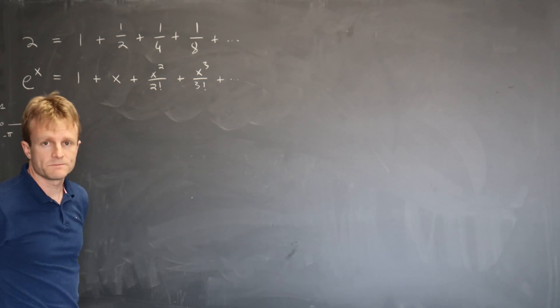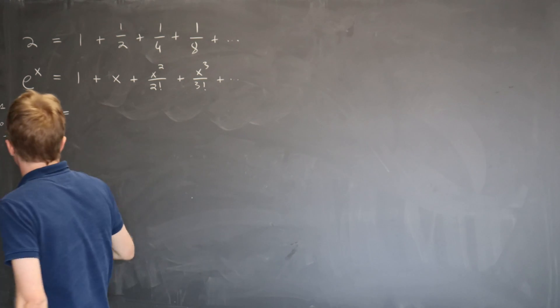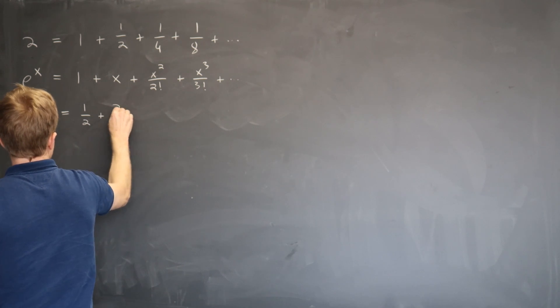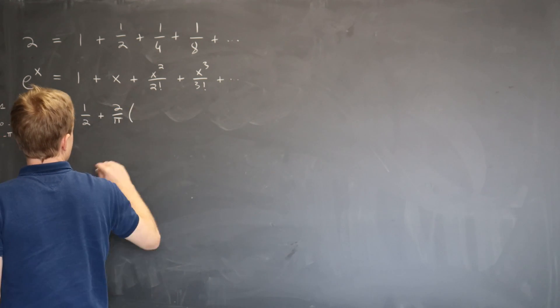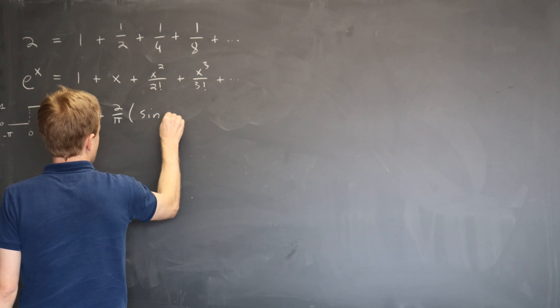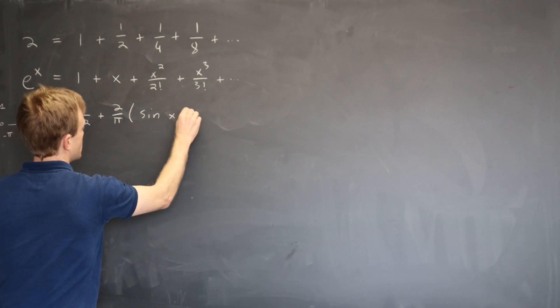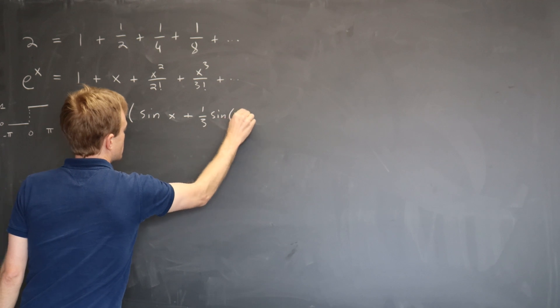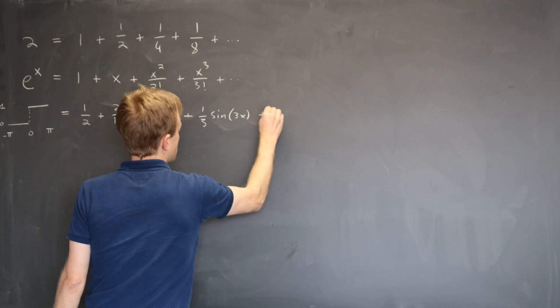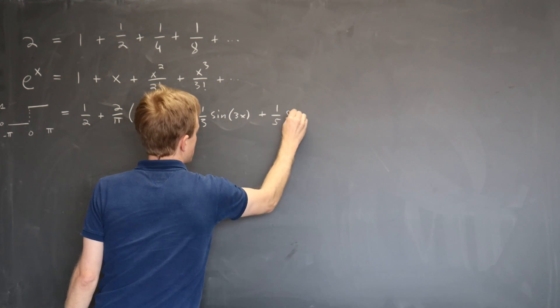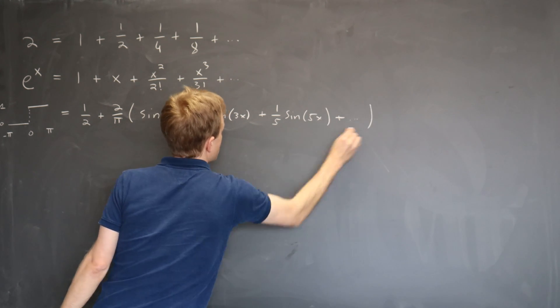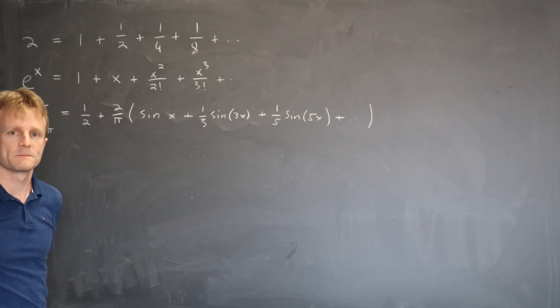The step function turns out to be writable as half plus 2 over pi times sin x plus a third sin 3x plus a fifth sin 5x, et cetera.